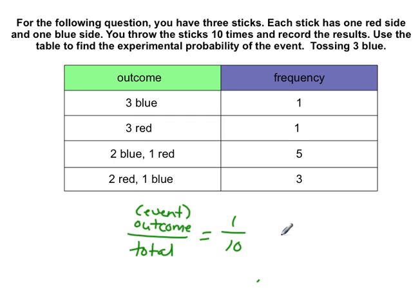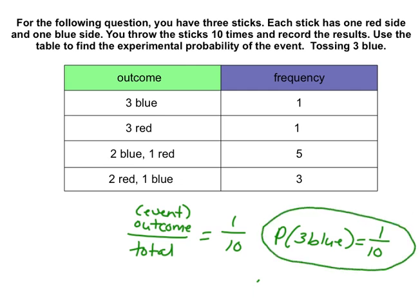So tossing 3 blue, that occurred one time out of the total amount that you tossed these, and that was 10. So the answer is 1 out of 10. So if we were to write that with P event, you'd write P parentheses, and they've added as tossing 3 blue. So 3 blue, end of parentheses, equals 1 tenth, and that is your answer. All right, going on to the next question.